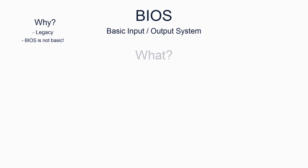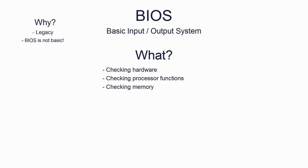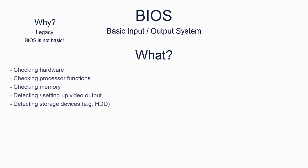We will now look at what the BIOS software does once it has been loaded by the processor. The BIOS starts by checking the basic set of hardware attached to the processor. This includes checking processor function, checking size and condition of memory, detecting video output, and detecting storage devices. Once the BIOS has verified the system is in working condition, it scans the list of available storage devices and checks them in turn for a boot section.